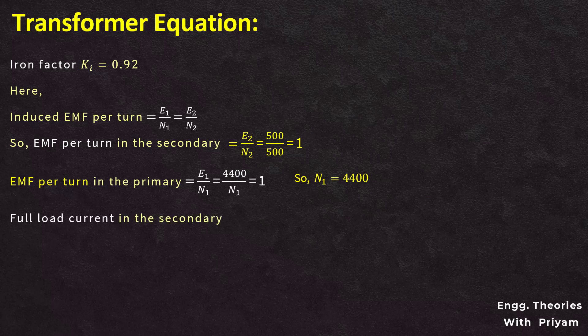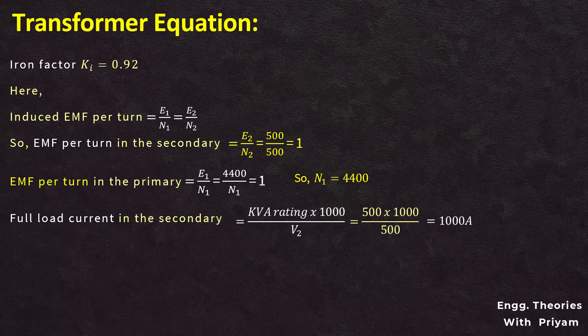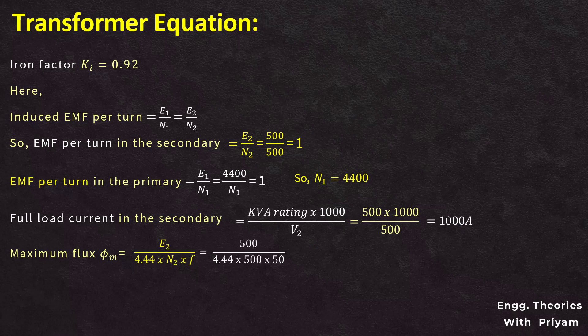The full load current in the secondary equals the kVA rating divided by the induced voltage in the secondary: 500 × 1000 divided by 500, which results in 1000 ampere. The maximum flux φm is determined from E2 equals 4.44 into N2 into f into φm, giving φm equals E2 divided by 4.44 into N2 into f. With E2 = 500, N2 = 500, and f = 50 Hz, this results in φm = 4.5 milliWeber.